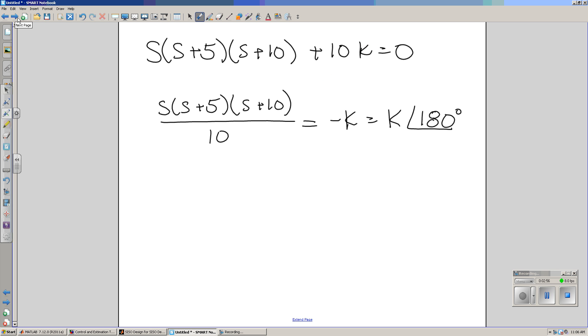Next, do some algebra. Bring the 10k to the right and divide by ten. What I wind up with is an amplitude and an angle condition. The two sides have to match, meaning the amplitude on the left is equal to k. That's how you find your gain k. The angle condition is actually what we use to sketch the root-locus. Since the function is equal to minus k, or k at 180 degrees, the angle of this term must be 180 degrees.